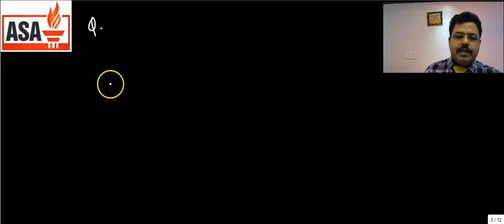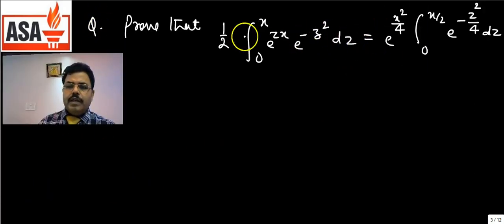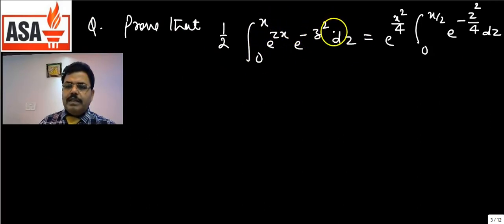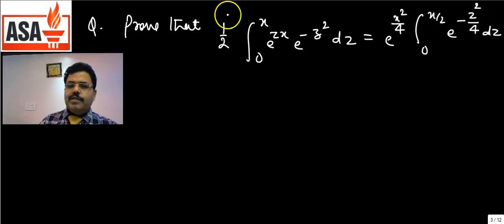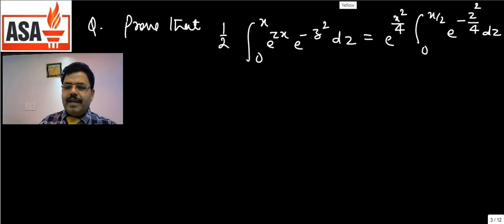The next question is: prove that (1/2)·∫₀²ˣ e^(zx)·e^(−z²) dz equals e^(x²/4)·∫₀^(x/2) e^(−z²) dz − e^(−x²/4). We need to prove these two expressions are equal.